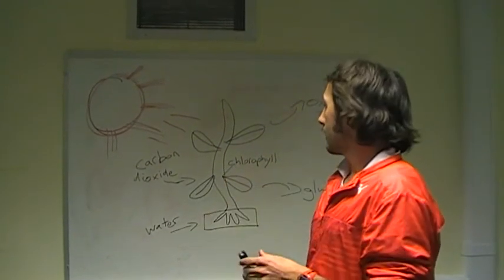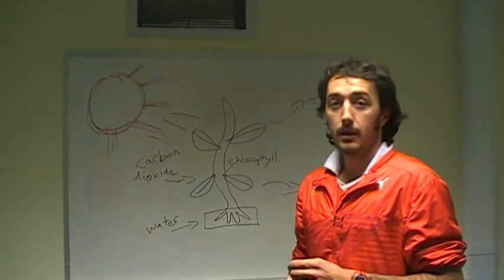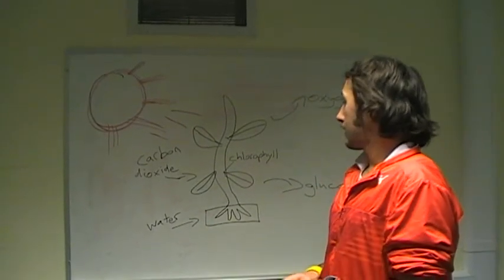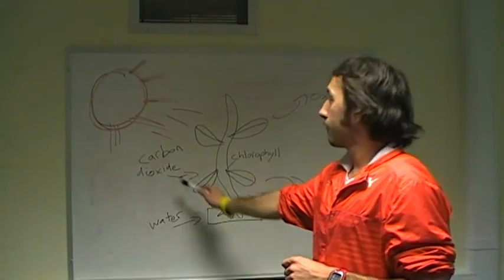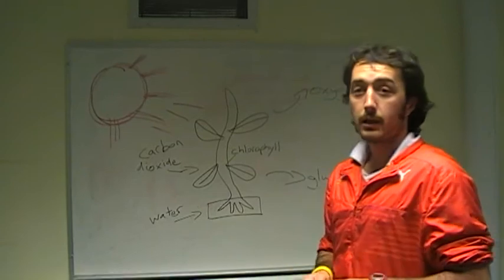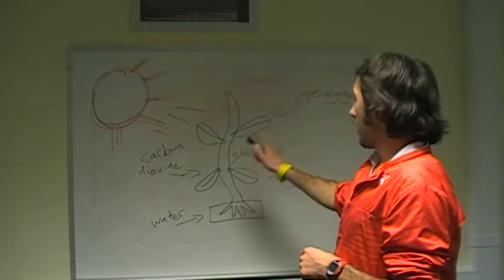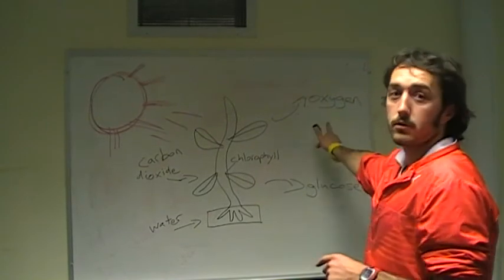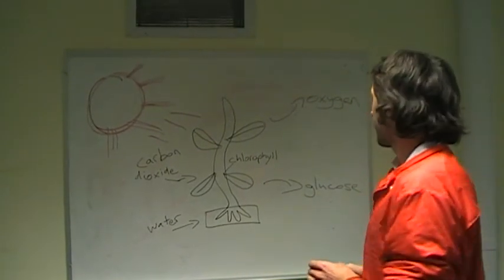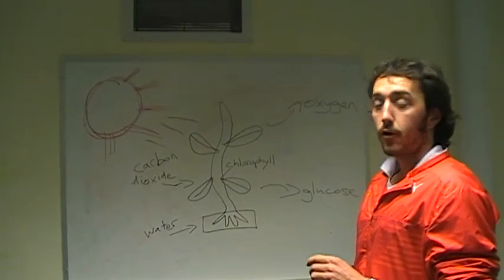This sunlight is absorbed in the plant, then the water which is being absorbed in the root of the plant is broken down from the sun's energy into hydrogen and oxygen.